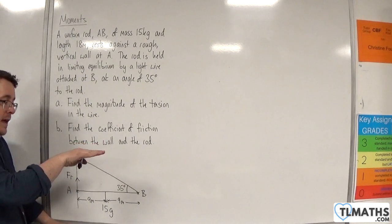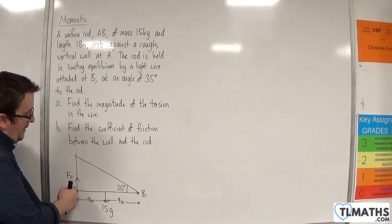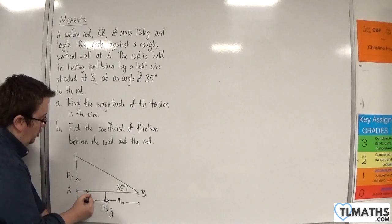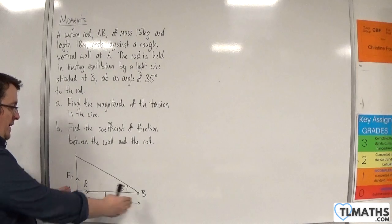The rod is trying to slip down the wall. Because it's in contact with the wall, there will be a normal reaction force R, which is going to be working perpendicular to the wall.